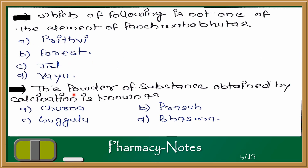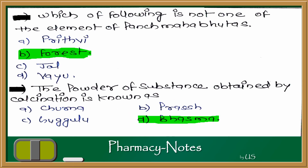Next question: the powder of a substance obtained by calcination is known as what? The options are Churn, Pras, Guglu, and Bhasma. Bhasma is obtained by the calcination process. So the answer is Bhasma. Forest is not part of the 5 Mahabhutas, and Bhasma is obtained by the calcination process.